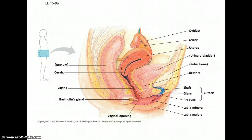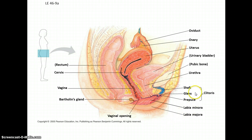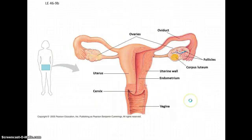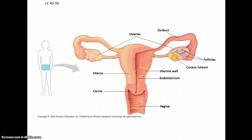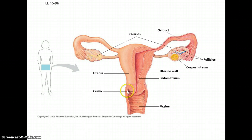In human female anatomy, we have the ovary producing the eggs, and the oviduct — otherwise known as the fallopian tube — traveling down to the uterus, this muscle that can expand greatly during pregnancy. There's also external anatomy for protection and stimulation. The endometrium is the lining of the uterus. The cervix is the opening to the uterus; during pregnancy it's blocked by a mucus plug that prevents anything from getting in that could have a negative effect on the baby.